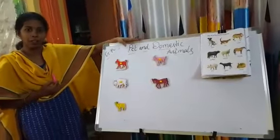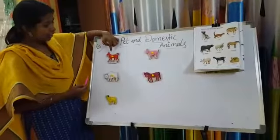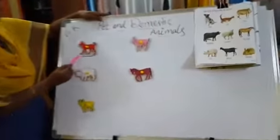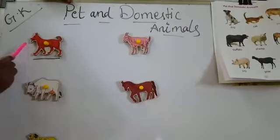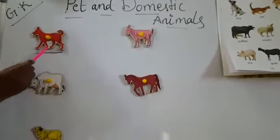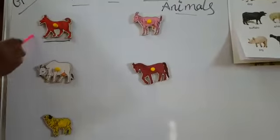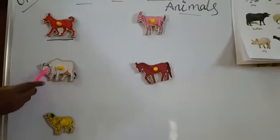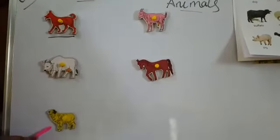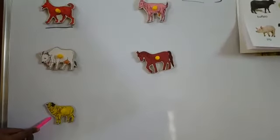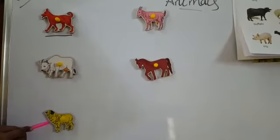Let us see some pet and domestic animal pictures. This is a dog. Dog is both a pet and domestic animal. And this is a cow. This is sheep. Cow gives us milk and sheep gives us wool.